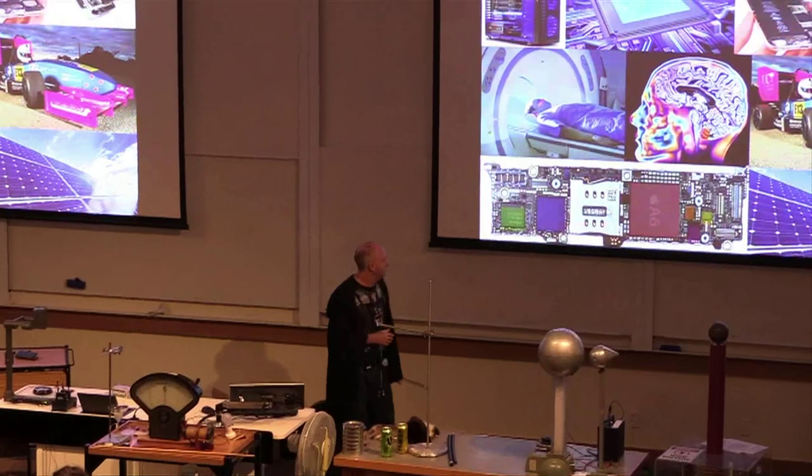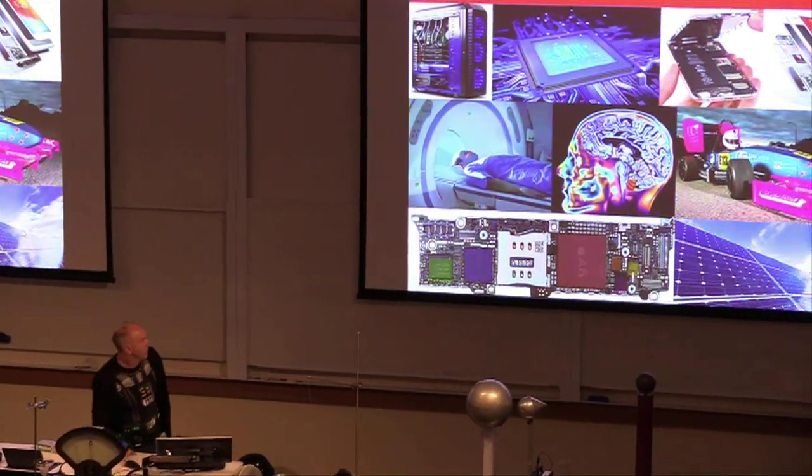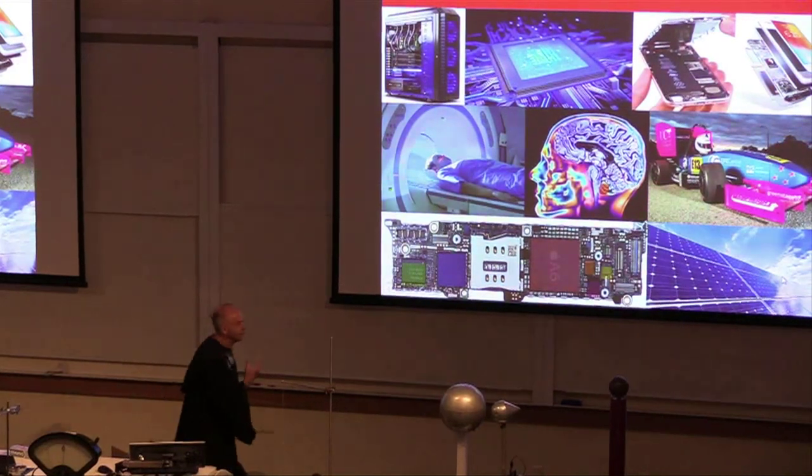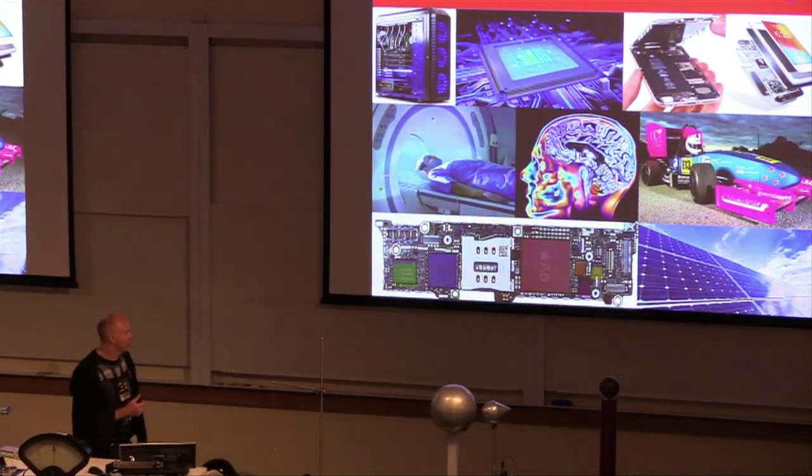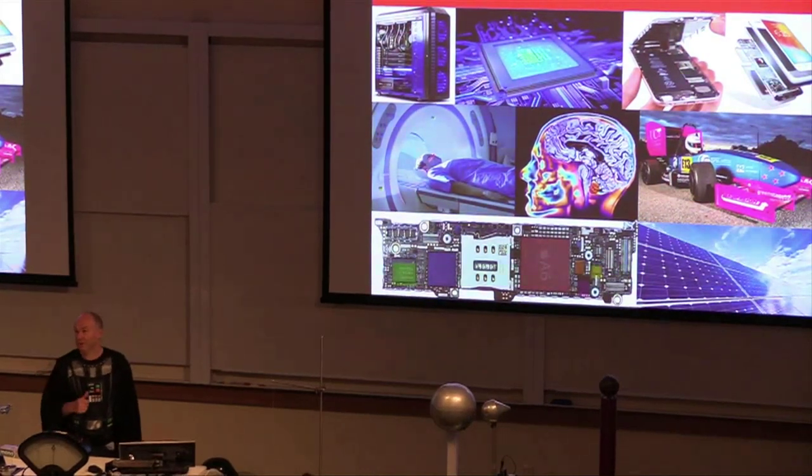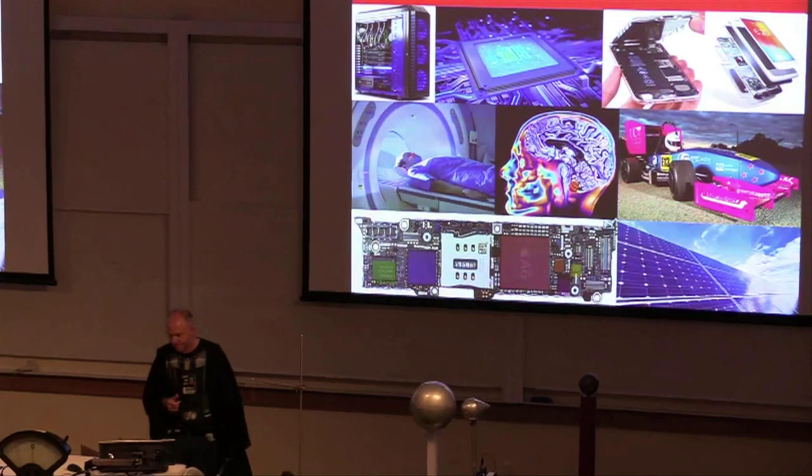This is just an image of inside an iPhone 7 showing all the various components. And finally, we've got solar. Again, it's all electrical engineering. This is going to be something which is going to dominate your lives as we move from fossil fuels to renewables to try and stop the planet from overcooking.